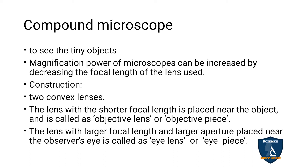For construction, they are using two convex lenses. The one lens with shorter focal length is placed near the object - they are called the objective lens or objective piece. So the objective lens has a shorter focal length. And the lens with larger focal length and larger aperture is placed near the observer's eye - that is the eyepiece lens, or eye lens.